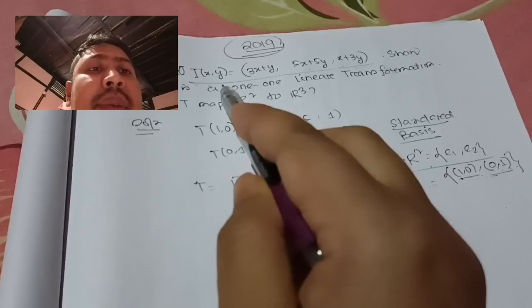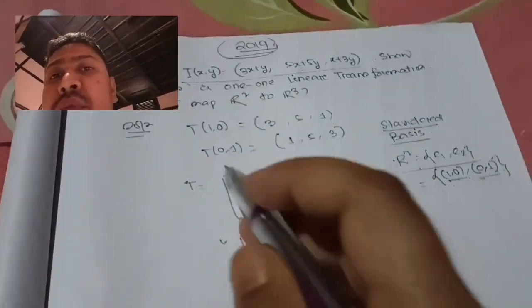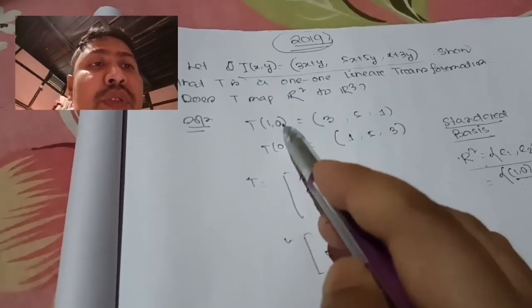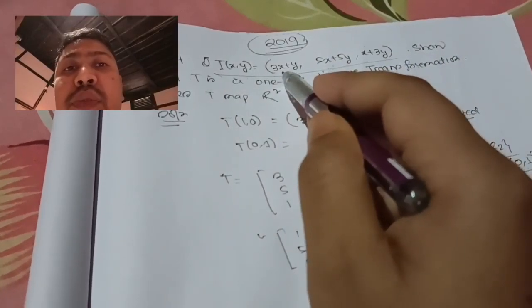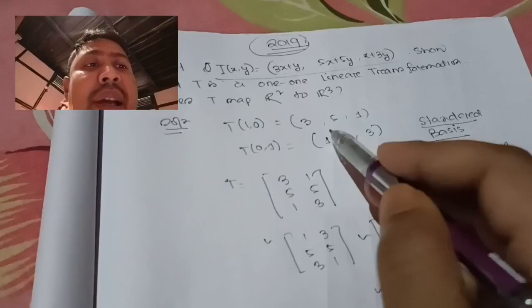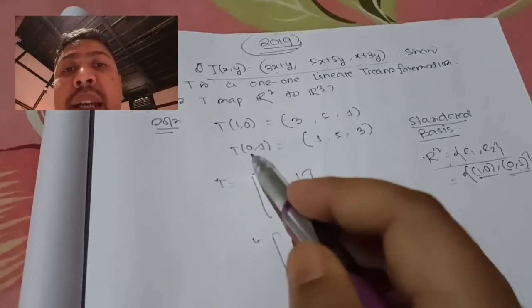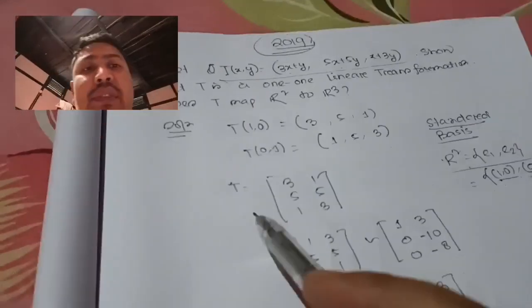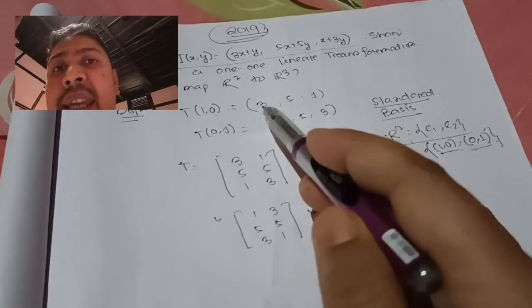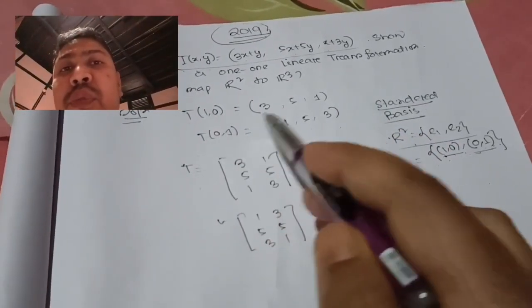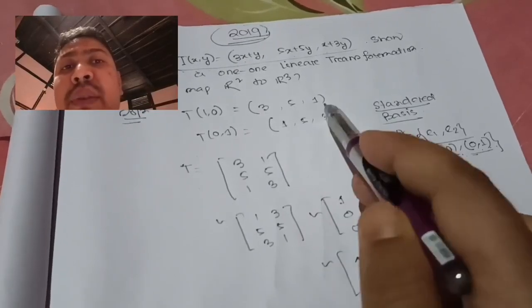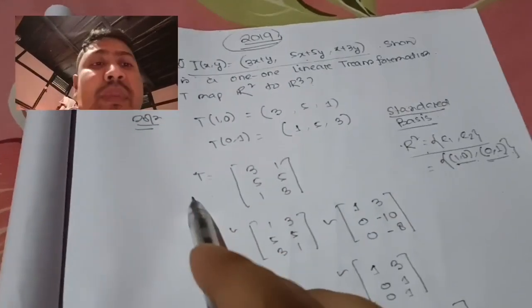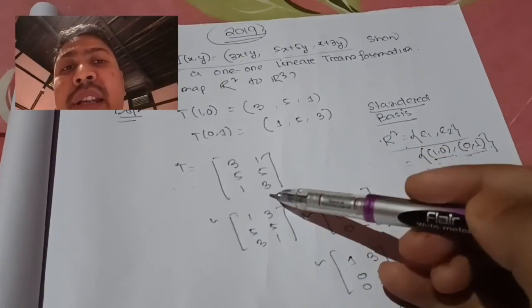First, put (1,0): T(1,0) gives us (3,5,1). Then put (0,1): T(0,1) gives us (1,5,3). Taking these as column vectors, the standard matrix is T = [3 1; 5 5; 1 3].